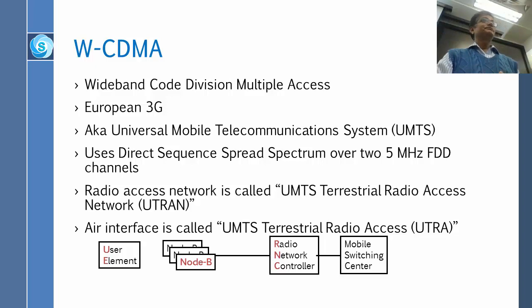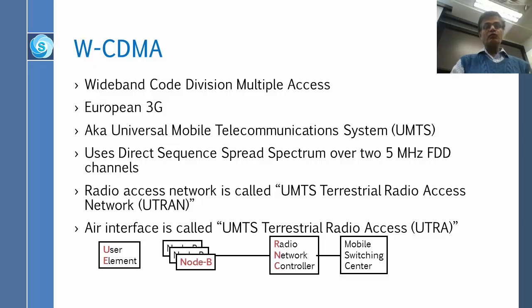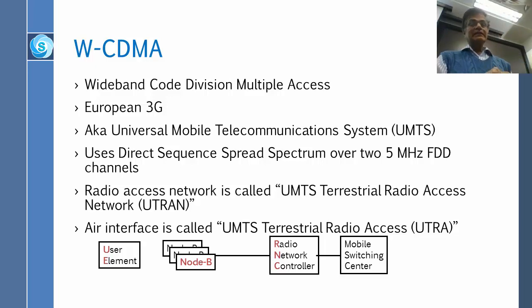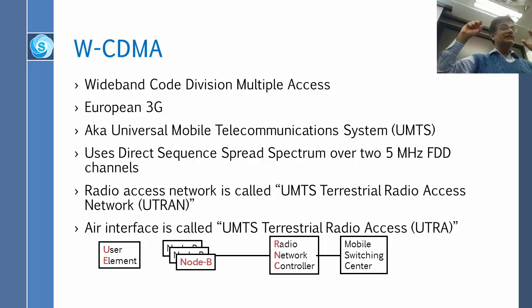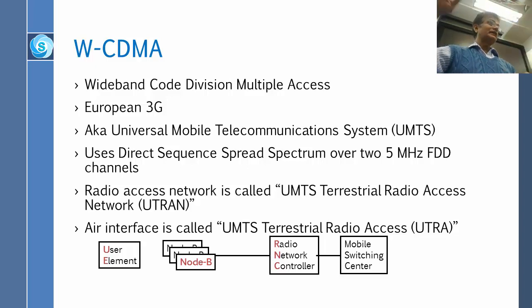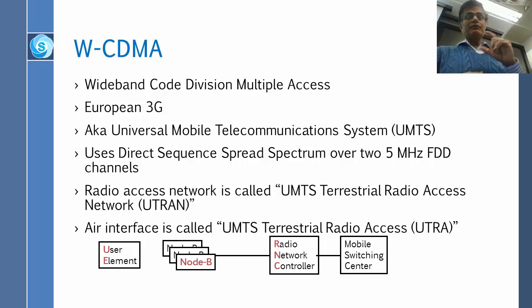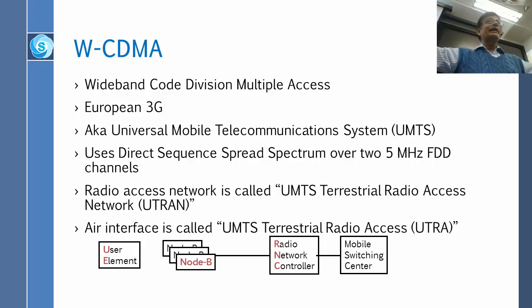Now we go to 3G. 3G is called WCDMA — Wide Band Code Division Multiple Access. This is the European 3G. If you remember the chart we had, there were two 3G branches. One was American and one was European. European is 3GPP, American is 3GPP2 — two organizations. The European went for wide band.